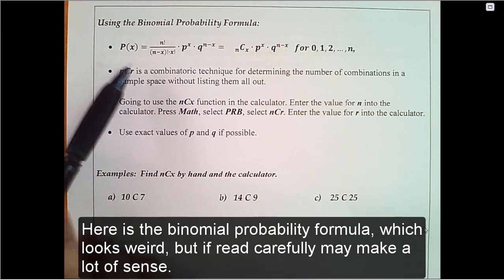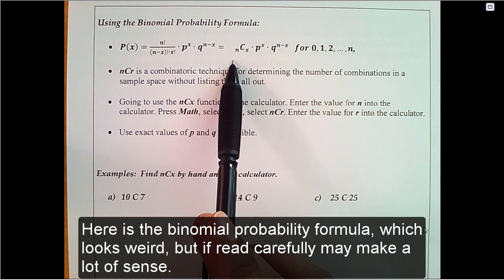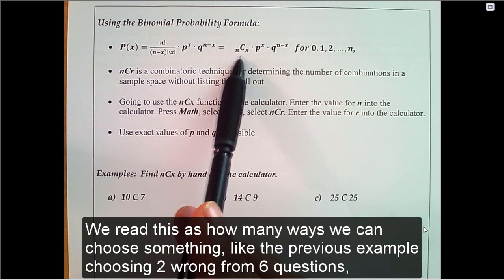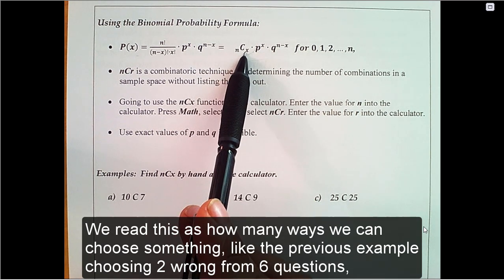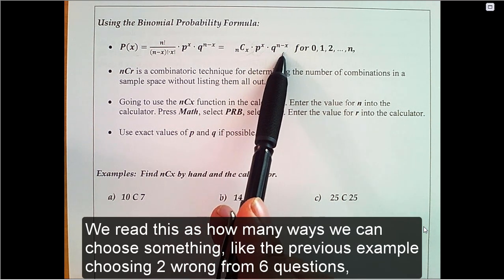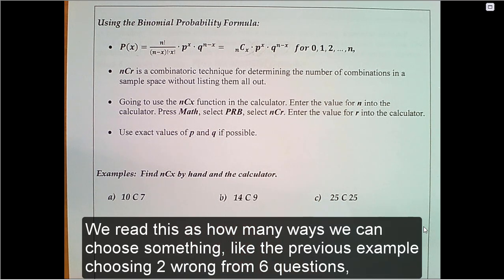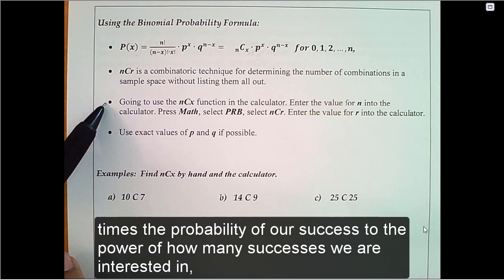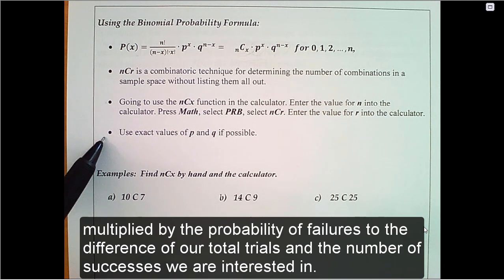Let's go ahead and look at the binomial probability formula, which looks weird, but if read carefully, may make a lot of sense. We read this as how many ways we can choose something — like the previous example choosing two wrong from six questions — times the probability of our success to the power of how many successes we are interested in, multiplied by the probability of failures to the difference of our total trials and the number of successes we are interested in.